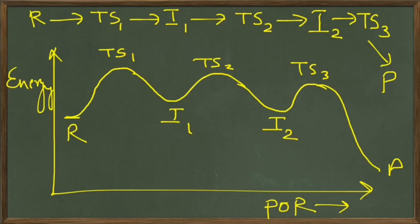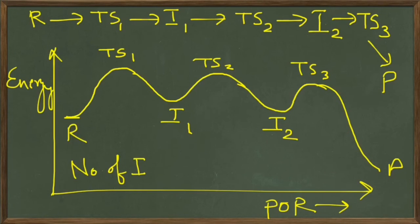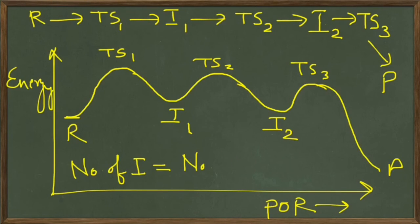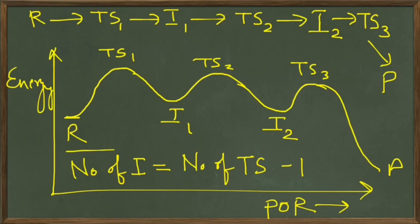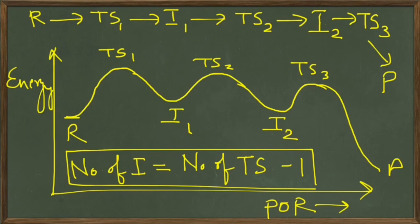From these graphs you can see a general rule: the number of intermediates is equal to the number of transition states minus 1. This is what you should remember from the energy diagram.